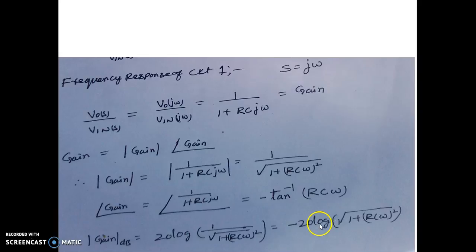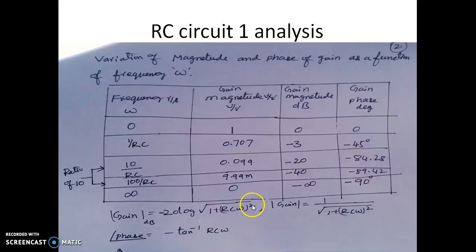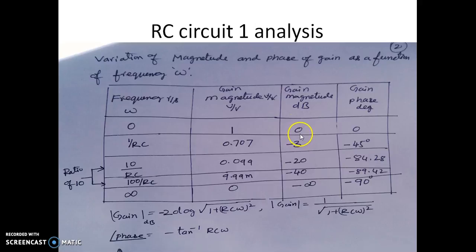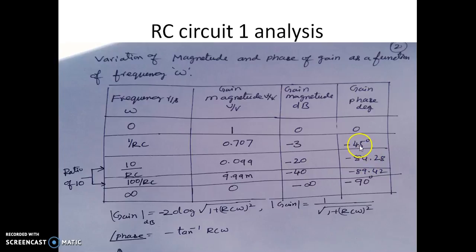This is the magnitude in terms of dB. We evaluated different values of omega starting from 0 to infinity, and in between, the value of omega in terms of 1 over RC. We found the magnitude in terms of dB, which is 0 dB at zero frequency, and it keeps reducing — as frequency increases by 10 times, the gain reduces by 20 dB. At frequency omega equal to 1 over RC, the phase was equal to minus 45 degrees.